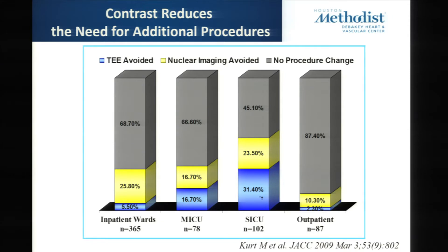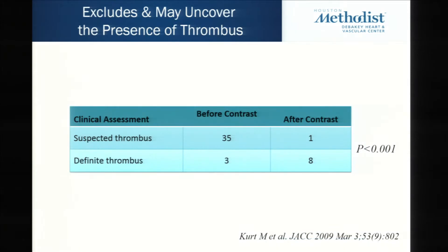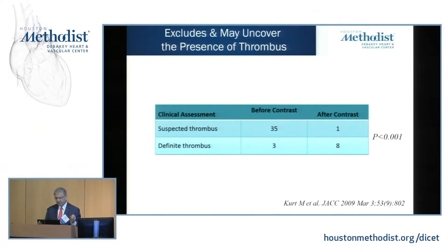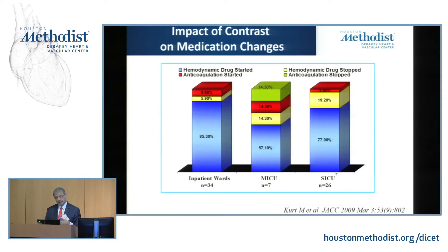Now let's take a look at the impact from a decision point of view on the clinician. The major impact is in intensive care units. There is avoidance of a transesophageal to evaluate ventricular function in almost 30% of cases, and avoidance of nuclear imaging in about 23%. Importantly, it changes the decision regarding thrombus formation. At times you'll be suspecting thrombus because of reverberations, and many of them actually did not have one. While the other is also true — at times you may not suspect it and you'll find a thrombus in a bad ventricle. The impact on medication change is also significant: inotropes are added or removed, and anticoagulation is started or stopped.